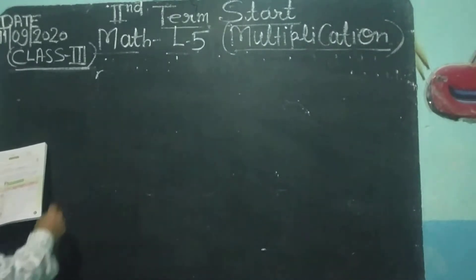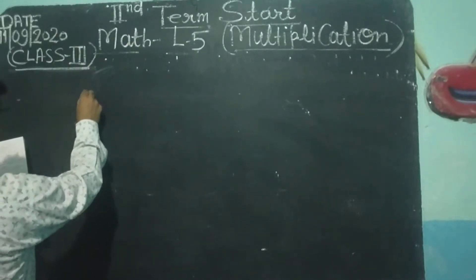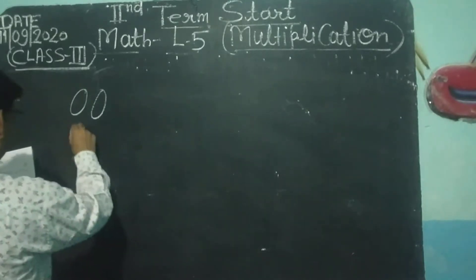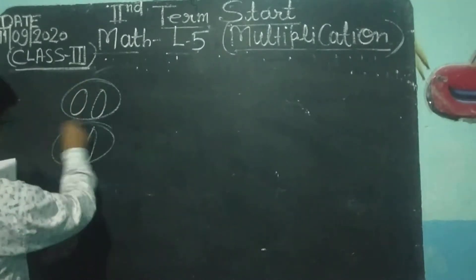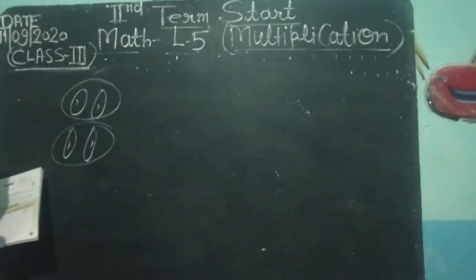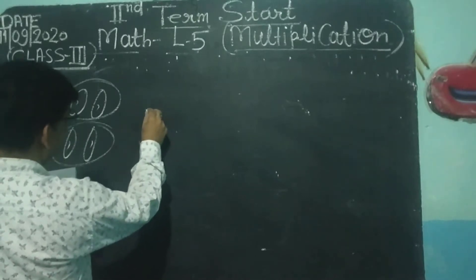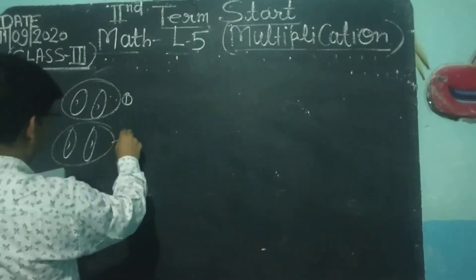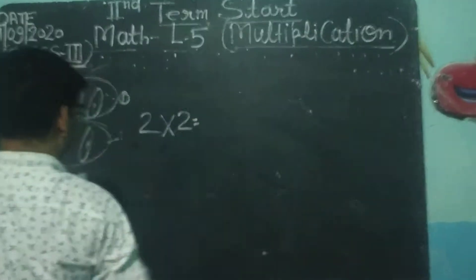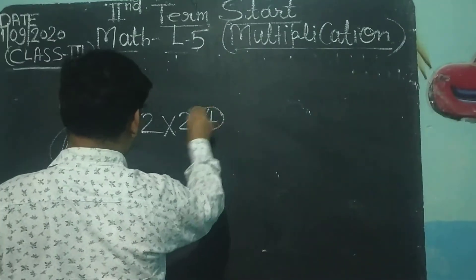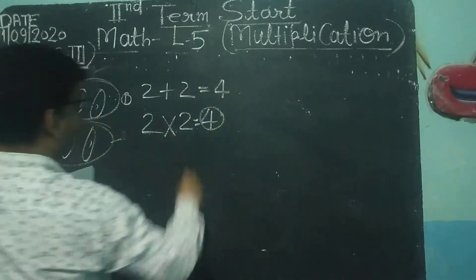इसमें 1, 2 — इसमें × है 2 के, तो इसमें 2 के कितने groups हैं? 3. 2 × 2 — 1 group, 2 group — 2 multiplied 2 equal 4. यहाँ यदि हम add करेंगे: 2 plus 2 equal 4.